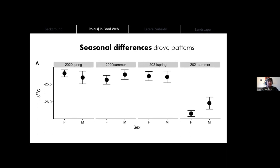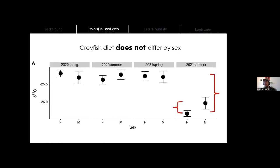We did this for all three isotopes — I'll use carbon as an example. When we look at whether crayfish diet differed by sex, we had to include season as a factor because there were really large differences in the isotopes of crayfish depending on the season. We accounted for seasonal differences as a random effect in mixed effects models for carbon, nitrogen, and hydrogen, and we found no difference between males and females. The apparent difference is because the variation among seasons was much greater than any differences observed between males and females.